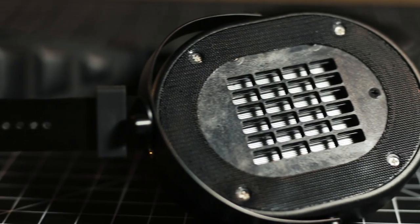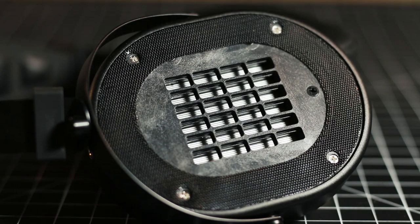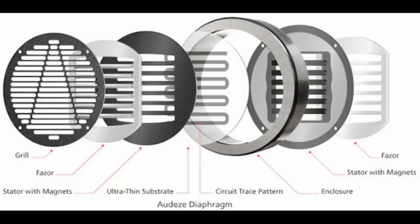Planar drivers use a different method to reproduce sounds, though it still uses a diaphragm or substrate to compress and then decompress air to produce sound waves. Instead of moving a cone with a relatively small voice coil, planar drivers spread that magnetic movement over the entire substrate. I'm not going too deep into this right now, but if you want me to do whole videos dedicated to how the different types of drivers work, let me know down in the comments.